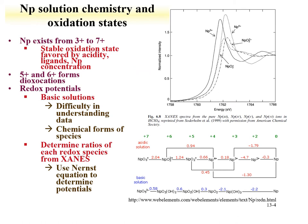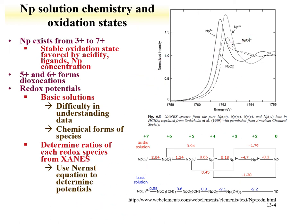Neptunium has a range of oxidation states available in solution from plus-3 to plus-7. The most stable oxidation state, as we'll see, would be the plus-5. However, other states can be stabilized based upon acidity, available ligands, and even the neptunium concentration. Similar to uranium, the plus-5 and plus-6 oxidation states form dioxocations. The redox potentials for neptunium have been evaluated, and in basic solutions there's some difficulty in evaluating the data due to the complex chemical speciation that occurs.